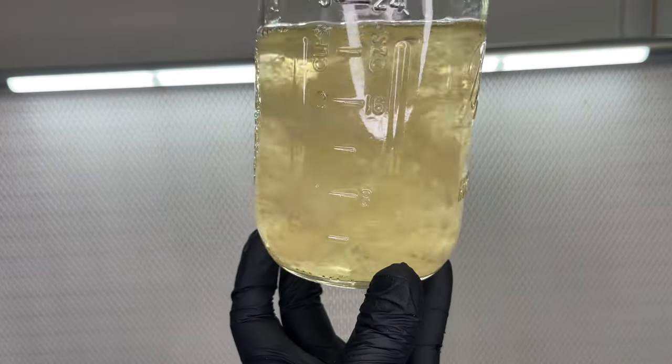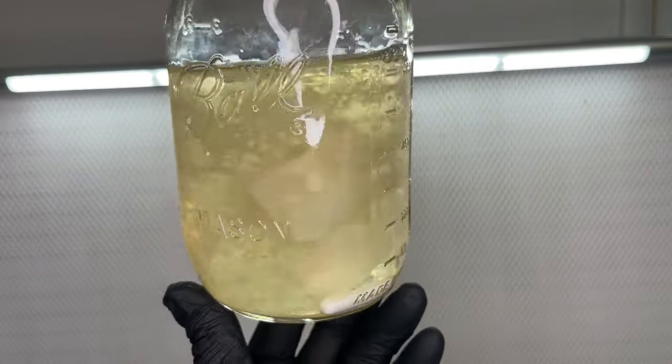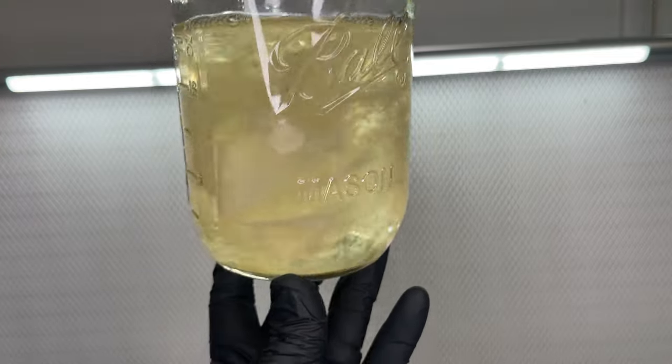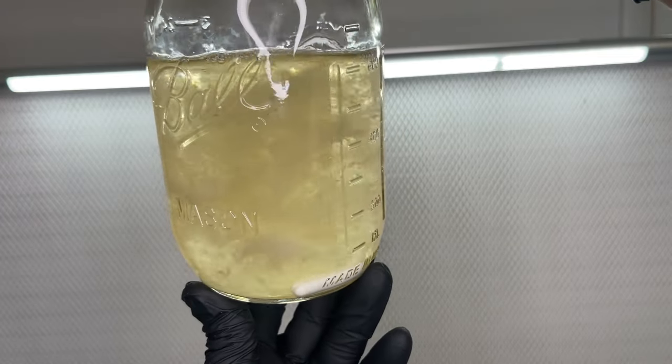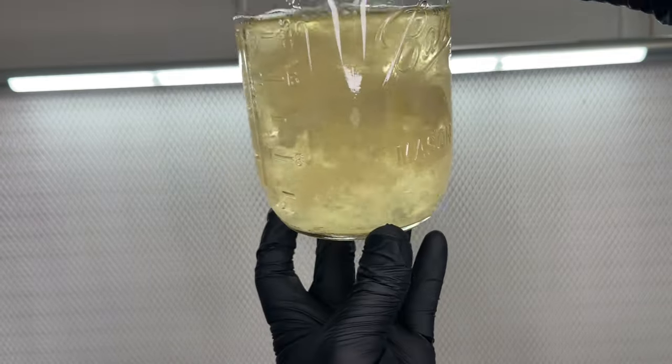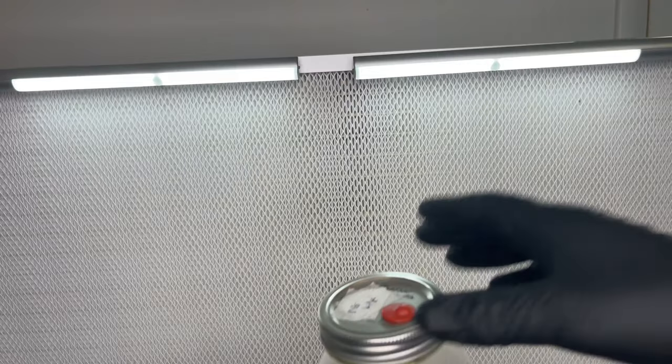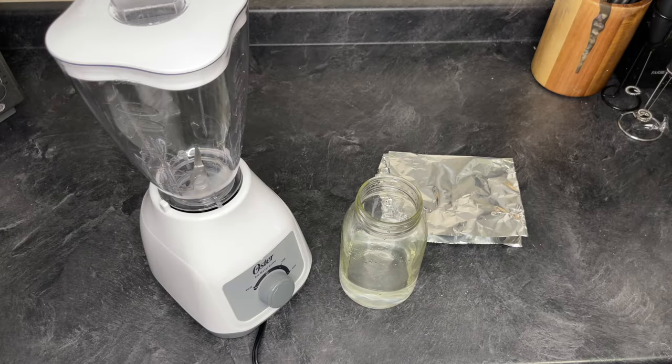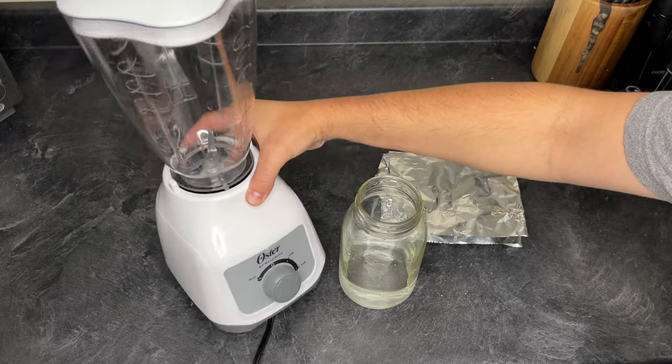Sometimes the mycelium in a liquid culture jar will grow too thick and we won't be able to make any syringes with it because it will just clog. The magnetic stir bar just isn't good enough to break up those large chunks of mycelium.